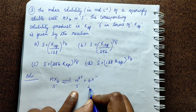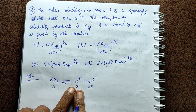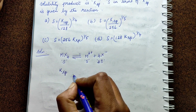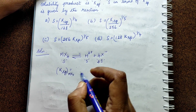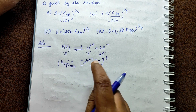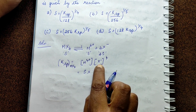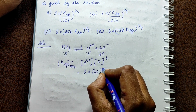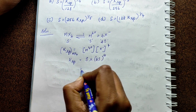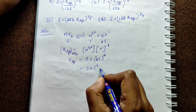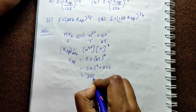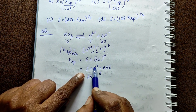The solubility value is 1S for M⁴⁺ and 4S for X⁻. So Ksp of MX4 = [M⁴⁺][X⁻]⁴. Substituting: S × (4S)⁴. Expanding: S × 4⁴ × S⁴ = 256 × S⁵. So Ksp = 256 S⁵. Now, S in terms of Ksp is given by the selected option.